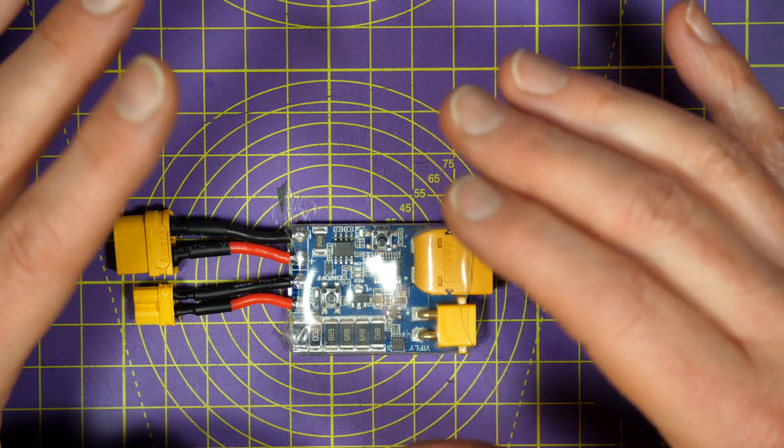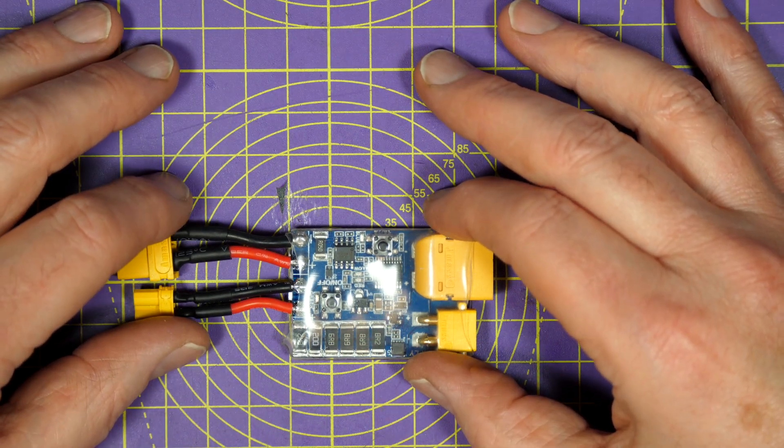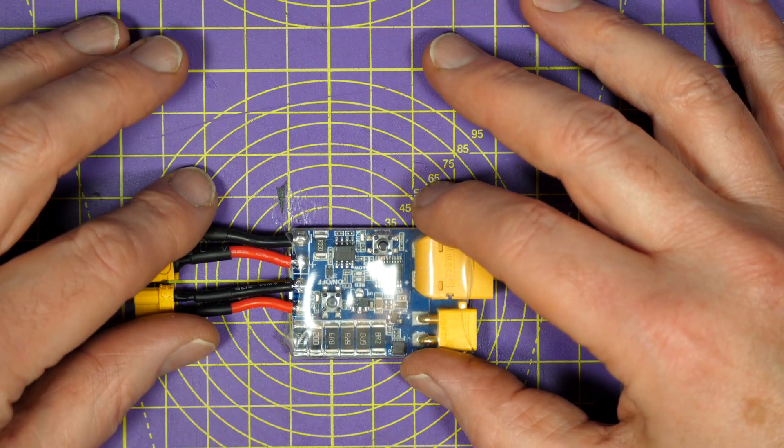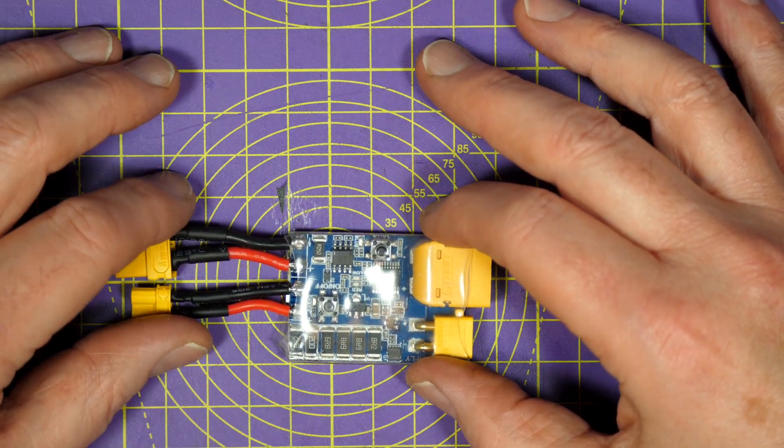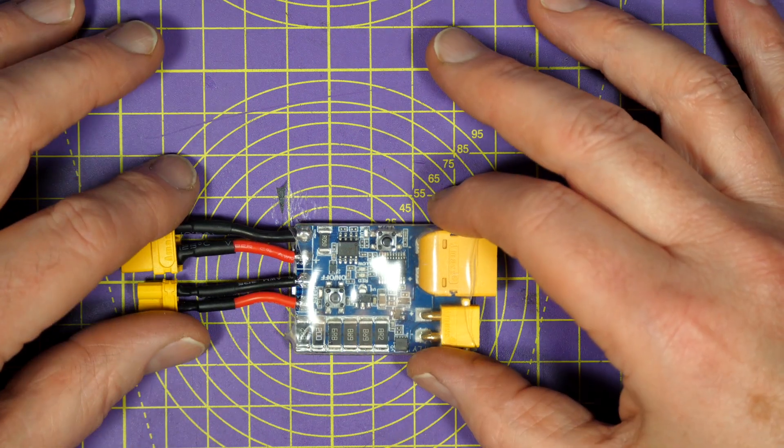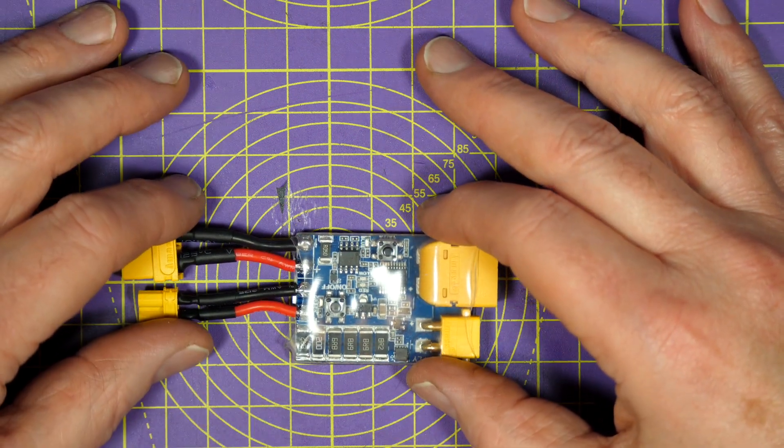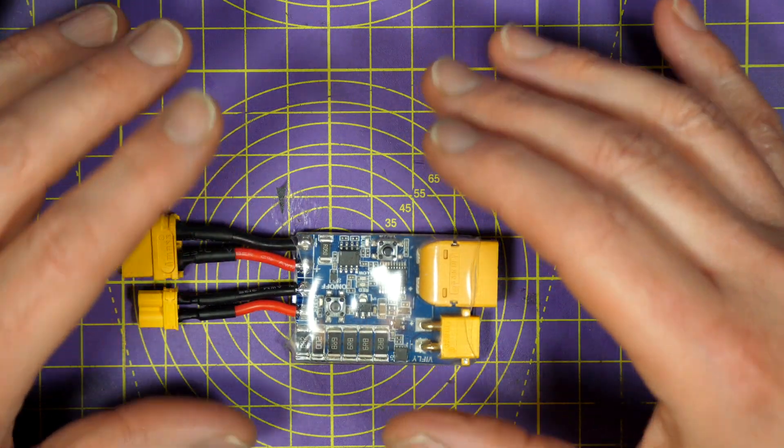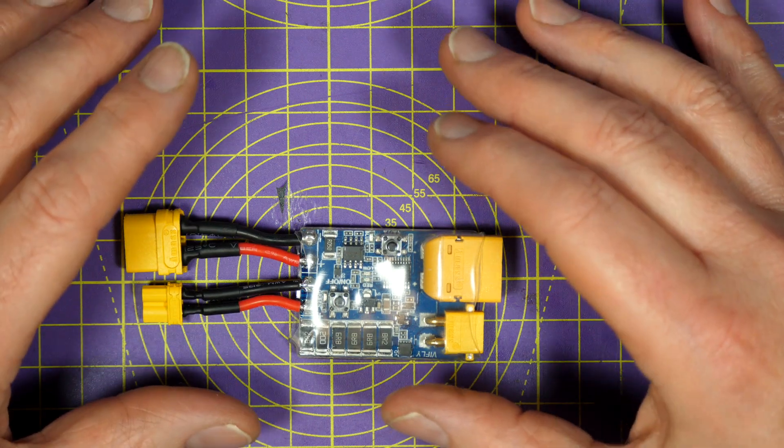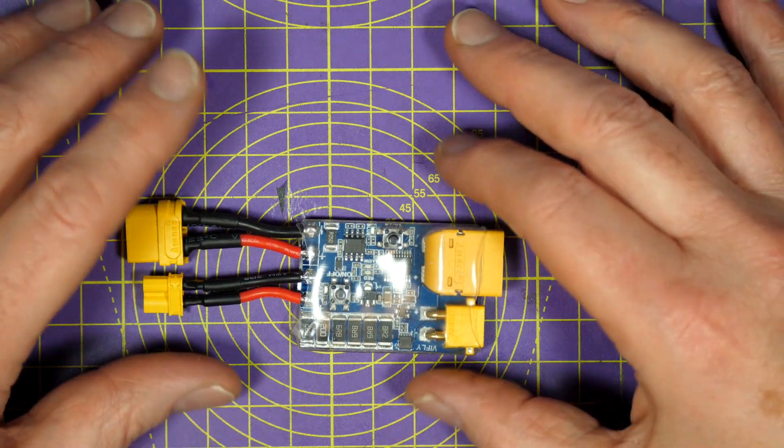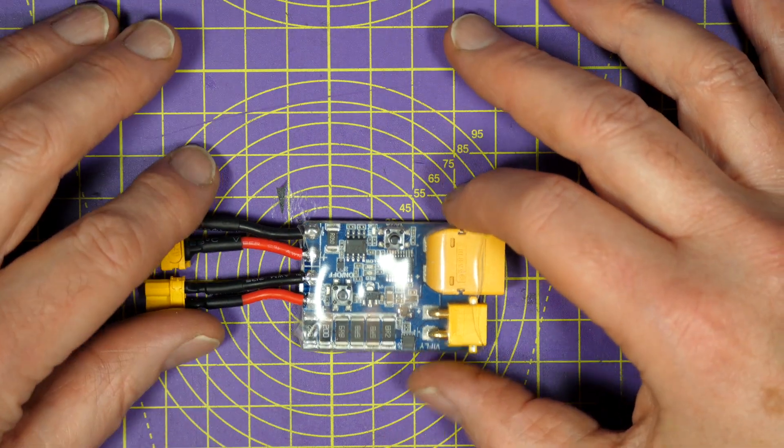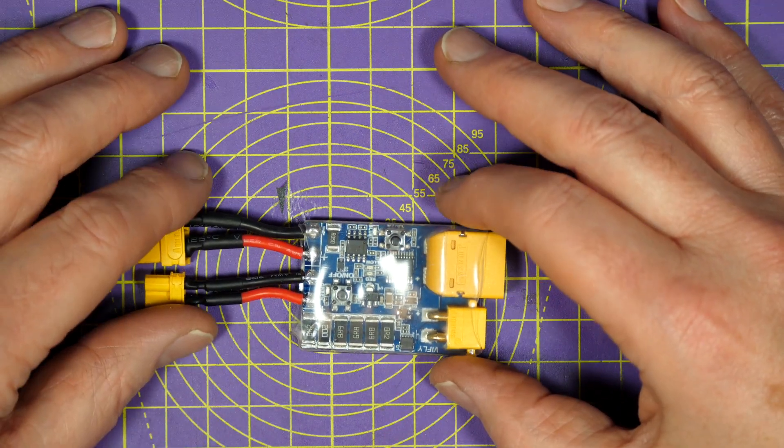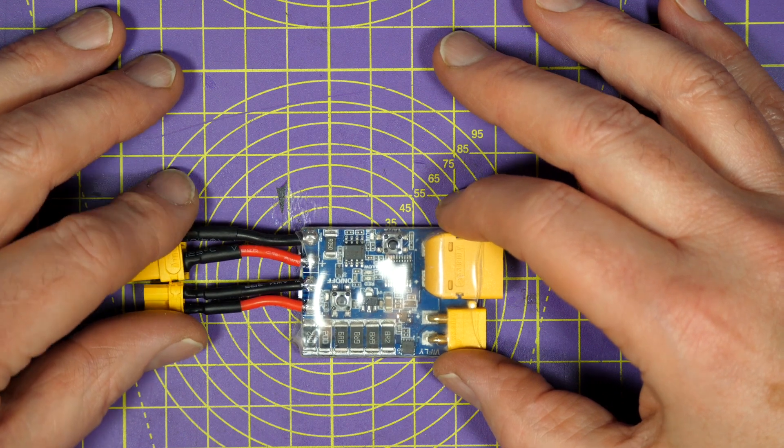You could use a current limiting bench power supply, or if you don't have one, you could build yourself a smokestopper using a couple of XT60 connectors and a car bulb that acts like a current limiter. And although this works fine, it doesn't cut the current off completely, it just limits it. And if you try and use a polyfuse type solution, it just doesn't respond fast enough to be 100% safe.